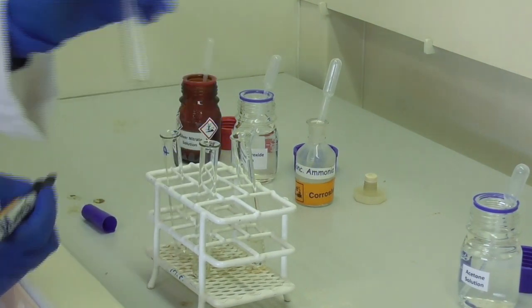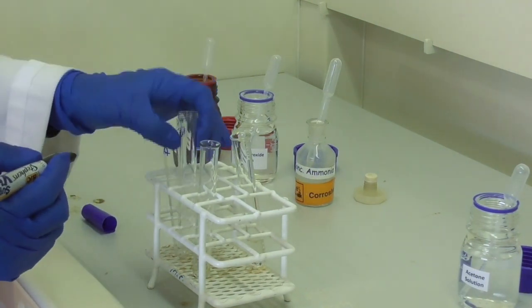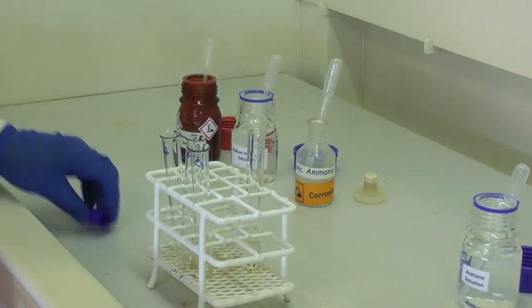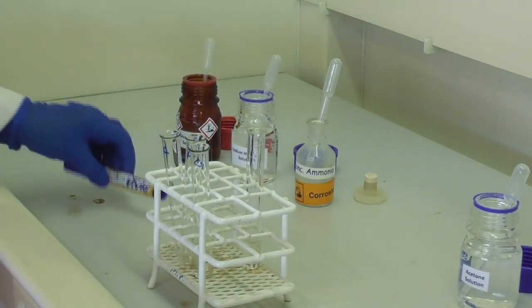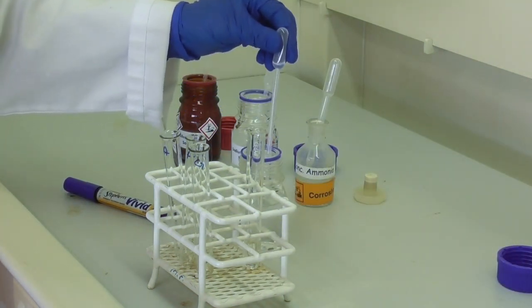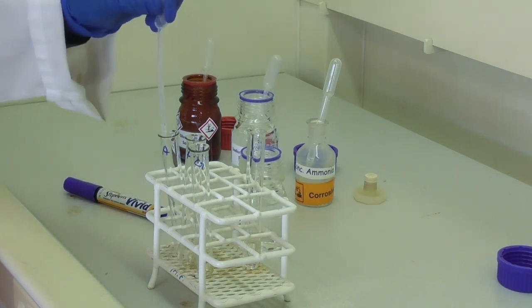To avoid any confusion in the next step, we label our test tubes before adding the reagents. To the first test tube, we add one milliliter of acetone.